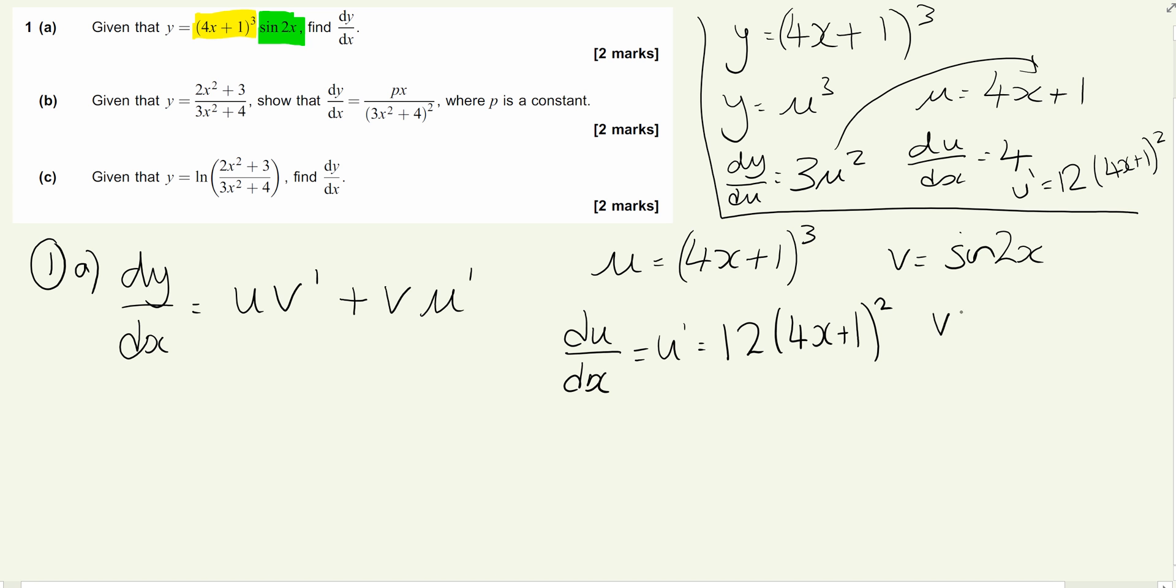We're then going to differentiate v, so v'. We should remember that sine differentiates to cosine. If you're not sure on that, try to remember this diagram: sin(x) to cos(x) to -sin(x) to -cos(x). If we go round clockwise, that's how these functions differentiate. If we go anticlockwise, that tells us how they integrate.